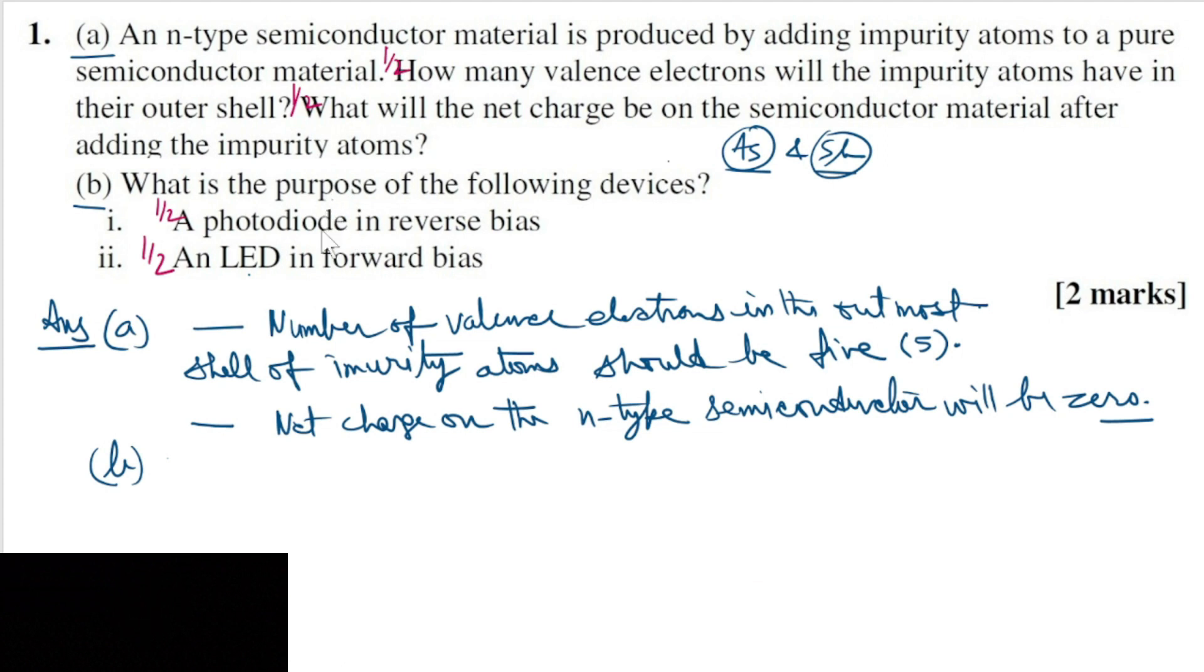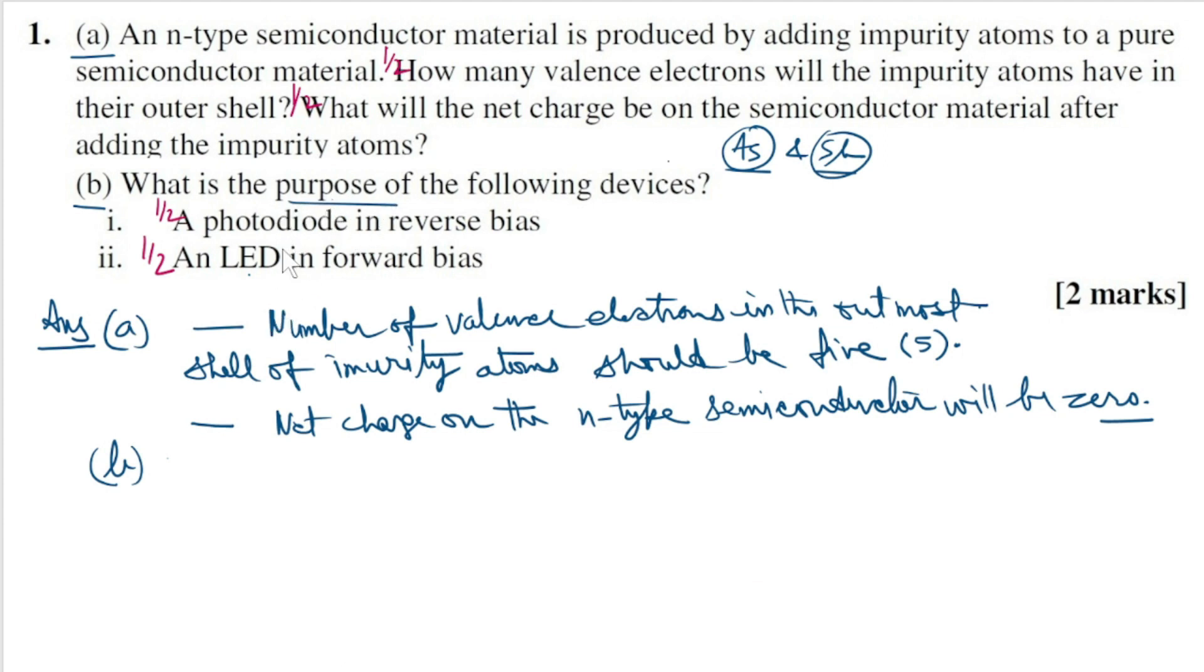Now part B: The purpose of the photodiode in reverse bias. Photodiodes are used in reverse bias because change in reverse saturation current is appreciable and which happens to be the measure of intensity of incident radiation. Thus, photodiodes are used in reverse bias as change in reverse saturation